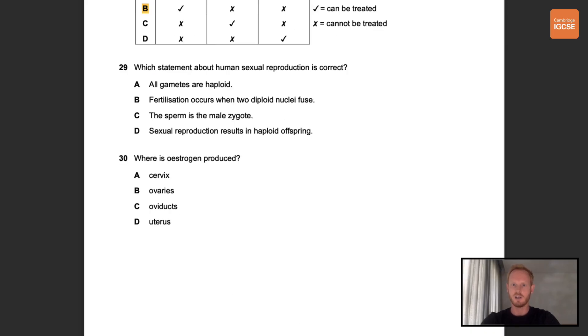Number 29. Which statement about human sexual reproduction is correct? So the correct answer here is A. All gametes are haploid. A haploid nucleus is one that contains half the normal number of chromosomes. During fertilization, two haploid nuclei fuse to form a diploid zygote.